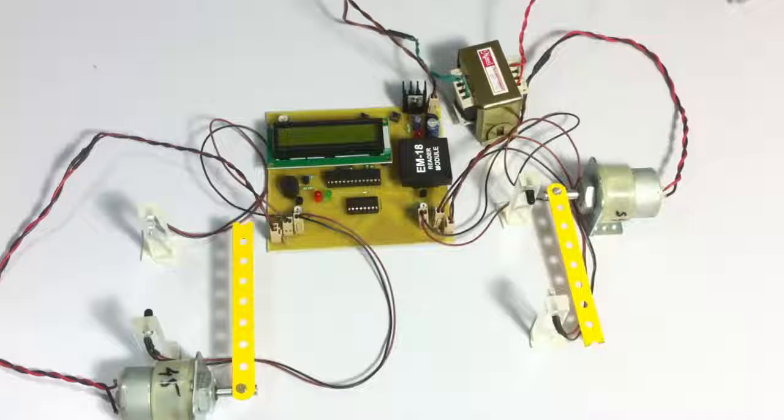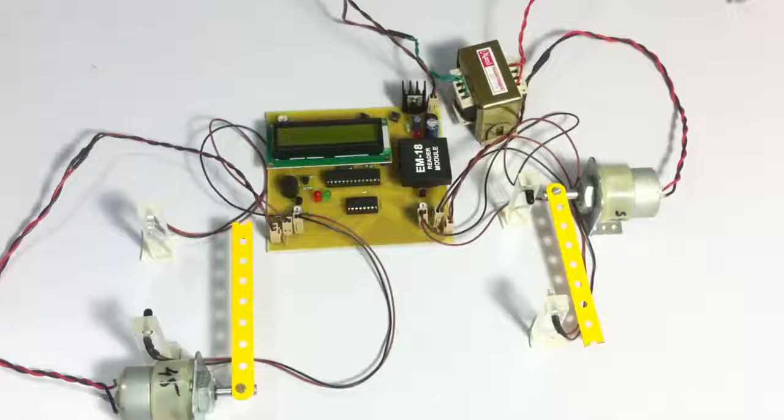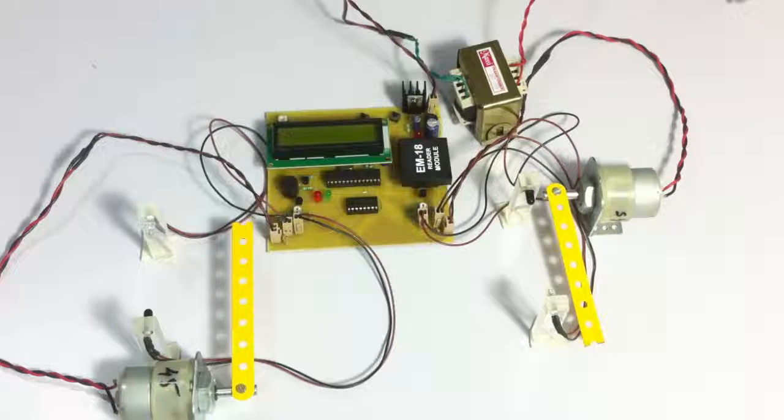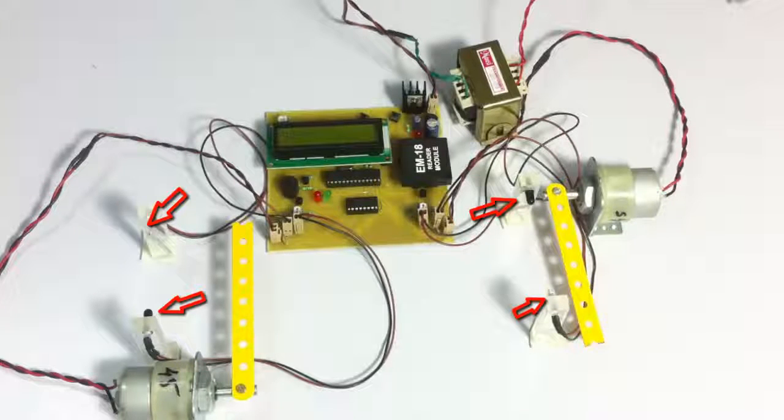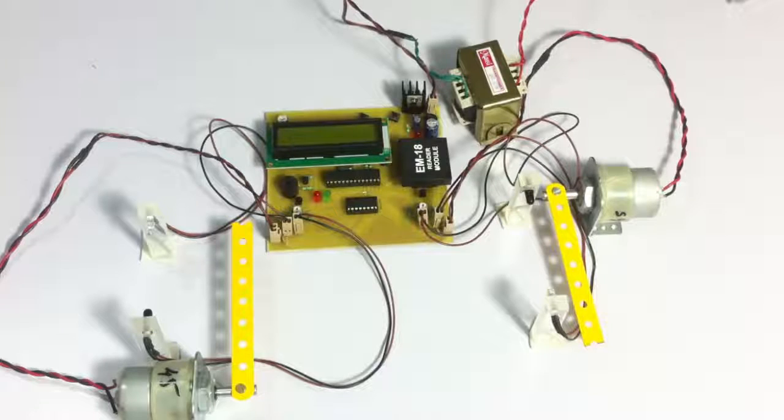This automated system is used to manage parking lots by checking vehicles that come in as well as vehicles that go out. It does this using IR sensors, and the system uses an AVR family microcontroller, which is an Atmega microcontroller, to manage the entire system.